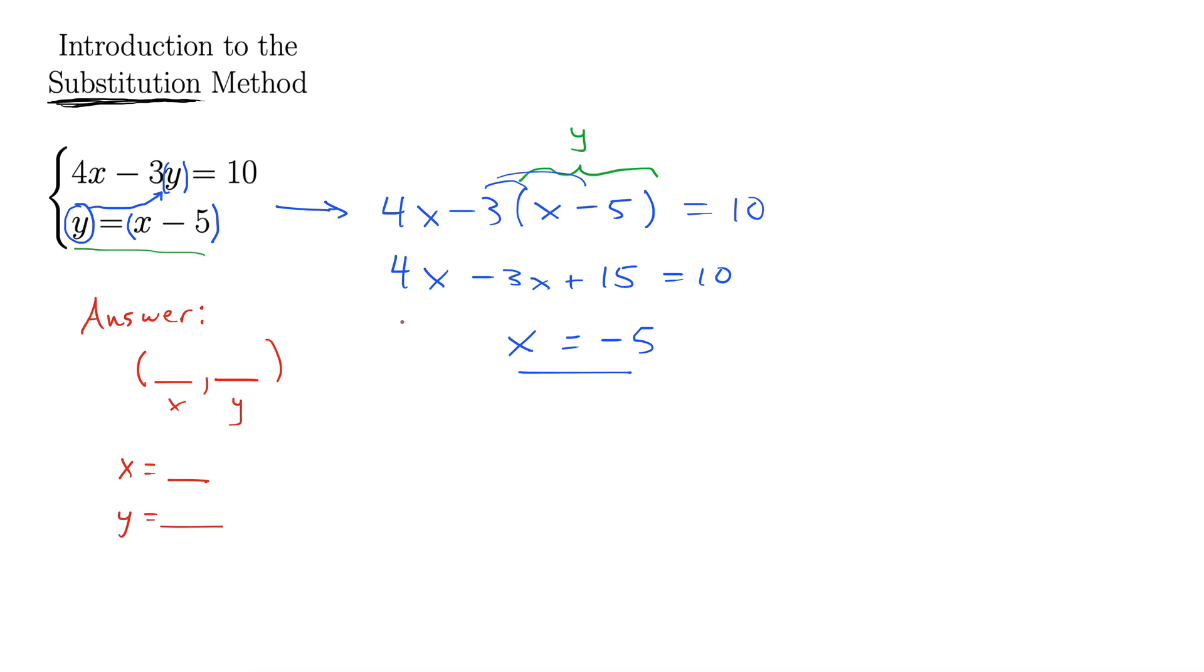So how do we get the other one? What we do now is back substitute. We have x equals negative 5. We need y, so I'm going to plug this in right here. Our x equals negative 5 gets plugged in for that x. So we have y equals negative 5 for x minus 5 again, which equals negative 10. So there's our second part of the answer.